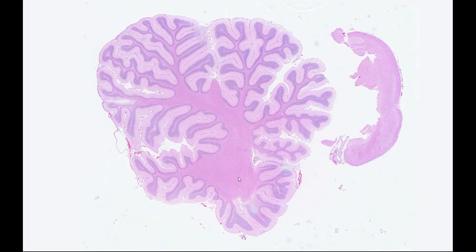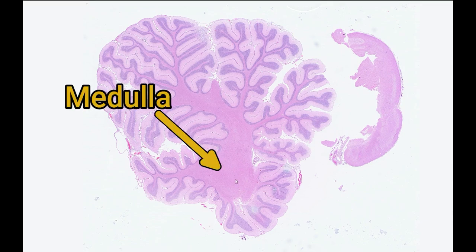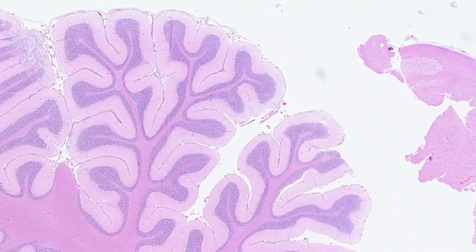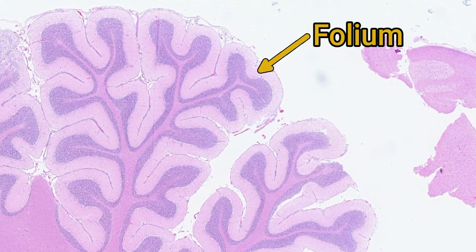Looking at the cerebellum at low power, we can see some macroscopic anatomic features. At the root of the cerebellum there's a central core of white matter. Sometimes this white matter is referred to as the cerebellum medulla, following the standard anatomic naming of medulla in the middle and cortex on the outside. This sends out branches which then branch once more and head off into the cerebellar cortex. Each individual white matter core with its cortical covering is called a folium, or folia in the plural.